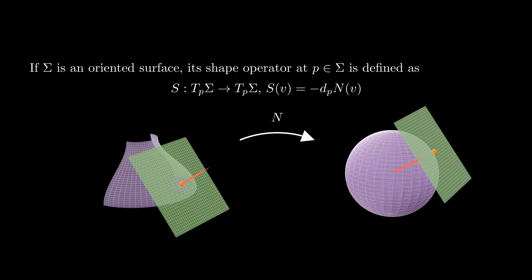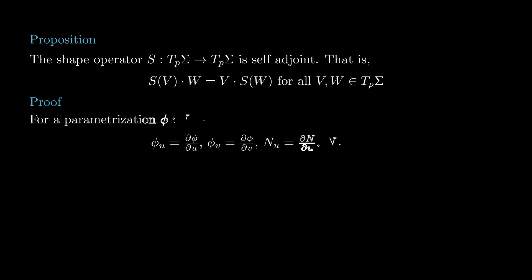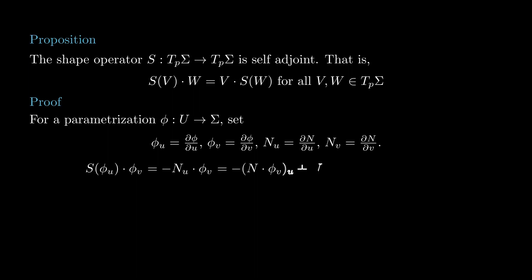Now we have to do some algebra and some geometry. Let's do the algebra first. We're going to show that this linear map, the shape operator, is self-adjoint. Recall that a self-adjoint linear map is one where we can pass it from one side to the other in a dot product. To show that S is self-adjoint, take a parametrization phi around p. We'll write phi_u and phi_v for the partial derivatives of phi, and n_u and n_v for the partial derivatives of n. We begin by looking at the dot product between S of phi_u and phi_v, which by definition equals minus n_u dot phi_v.